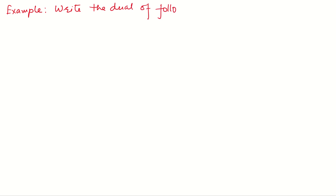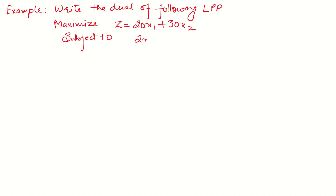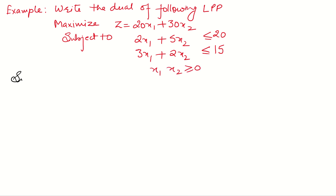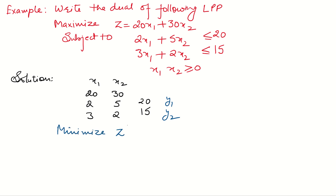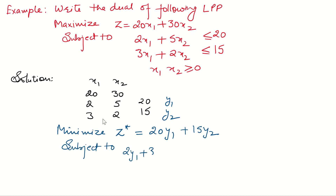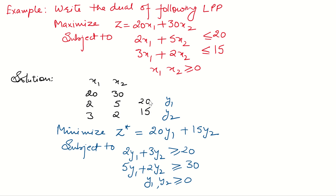Case 1: when all signs are given less than or equal to, in case of maximization. Write the dual of the following primal problem: Maximize z = 20x1 + 30x2, subject to 2x1 + 5x2 ≤ 20, 3x1 + 2x2 ≤ 15, and x1, x2 ≥ 0. To write the dual, first copy all the coefficients of the objective function and constraints, then take two variables y1 and y2 and read column wise. The dual is: Minimize z* = 20y1 + 15y2, subject to 2y1 + 3y2 ≥ 20, 5y1 + 2y2 ≥ 30, where y1 and y2 are both positive. Always remember: to write the dual, always read column wise.